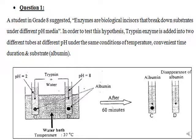Let's move to exercise 1. A student in grade 8 suggested: enzymes are biological catalysts that break down substrates under different pH media. In order to test this hypothesis, trypsin enzyme is added into two different tubes at different pH, under the same conditions of temperature, time duration, and substrate, which is albumin. Both tubes are placed at 37 degrees Celsius.